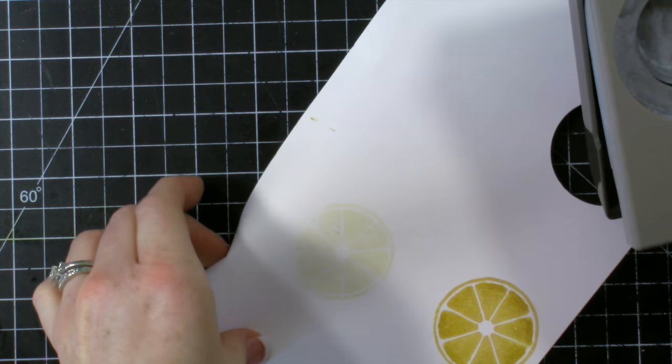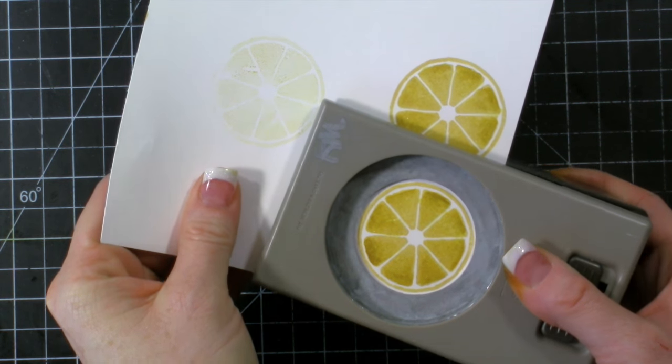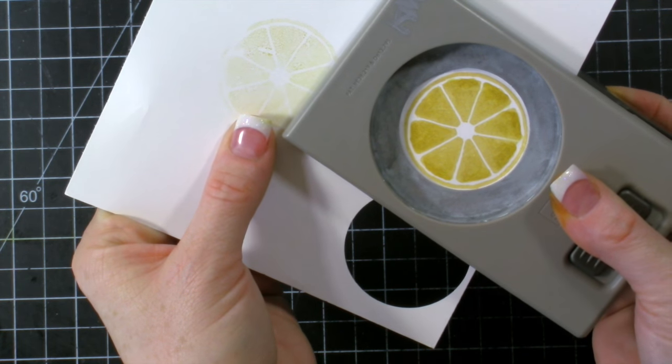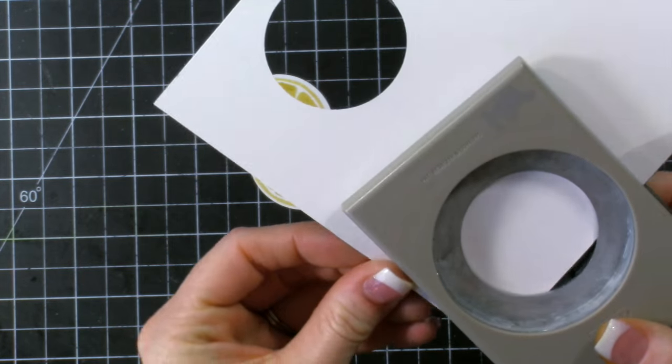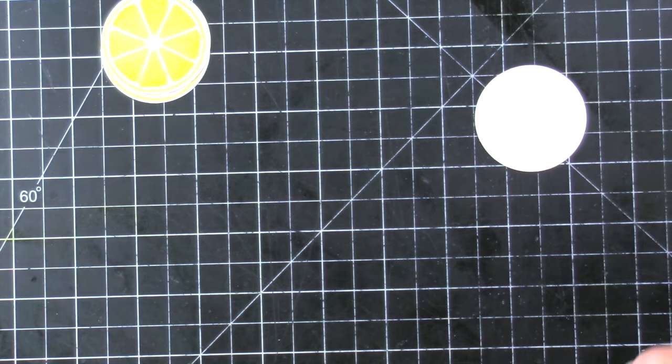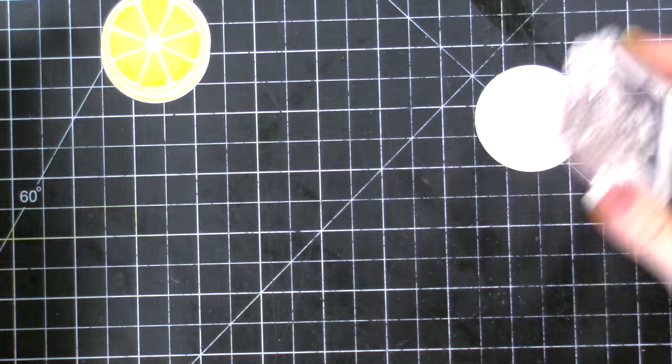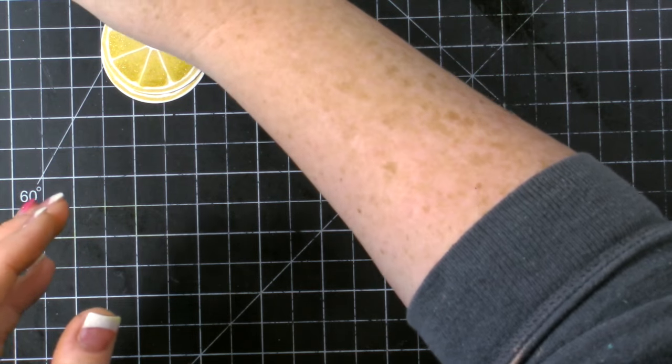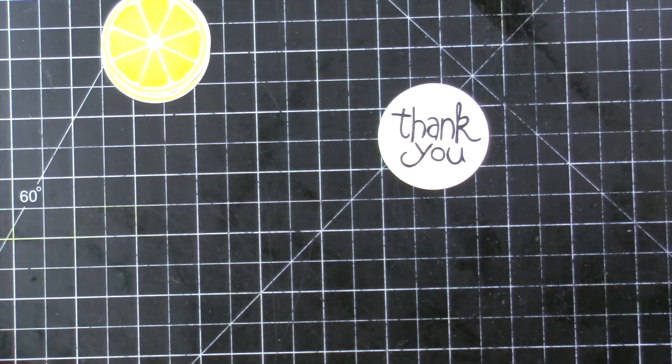I have a 1 and 3/4 inch punch, and that coordinates with this stamp set. It will punch this out perfectly. You just line it up and punch it out. Just like that. And then we're going to need one more white one, just plain white circle. We're going to stamp our sentiment and we'll do that really quick. We're using the Thank You from the same stamp set. I'm just using Memento Black ink. I want to use black; I'm going to accent this card with black. Just like that, it fits perfectly.